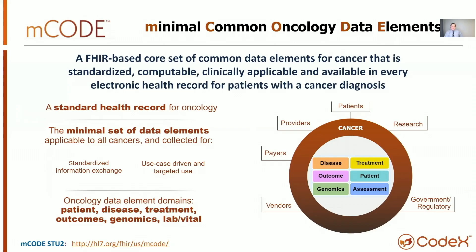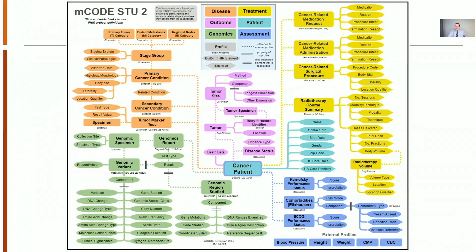We've tried to leverage standard ontologies whenever possible, and then fill in gaps for things like disease status when other terminologies and vocabularies fall just short of describing that cancer patient. This is an HL7 data standard, and currently we're in the standard for trial use number two. The goal is to describe these data and make them available for any group — including researchers, patients, providers, registries, and payers for prior authorization. There are six domains within mCODE: disease, outcome, genomics, treatment, patient, and assessment. In each of those domains we have a number of data elements, and this high-level overview shows those data elements, which number right around 100 in total.